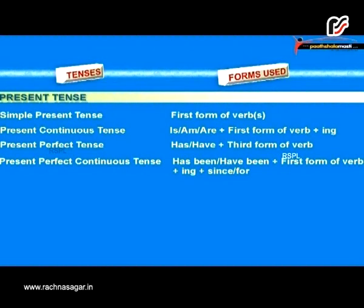In the present perfect continuous form we have has been/have been plus first form of verb plus -ing, plus since or for.